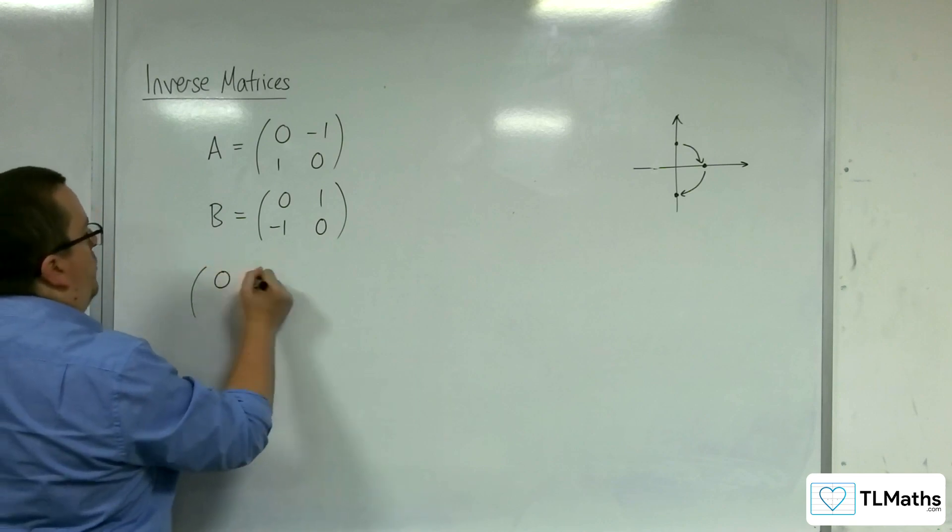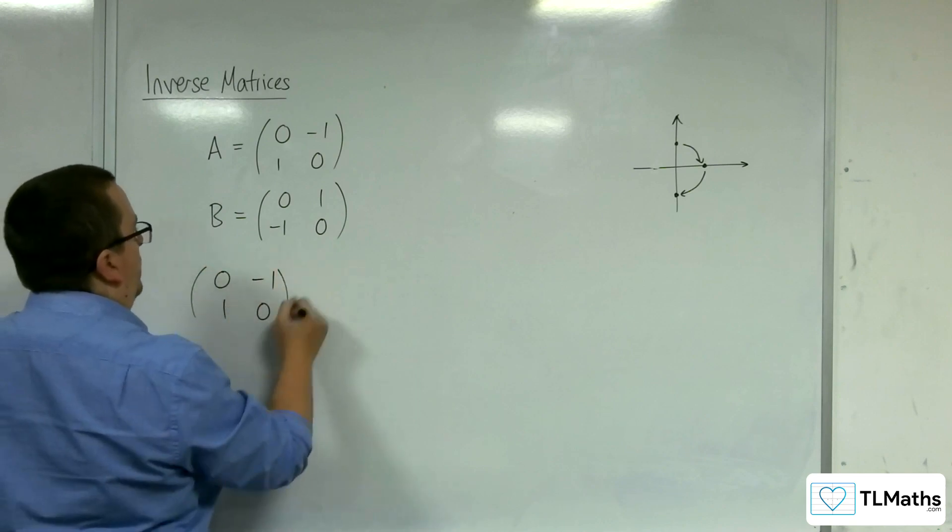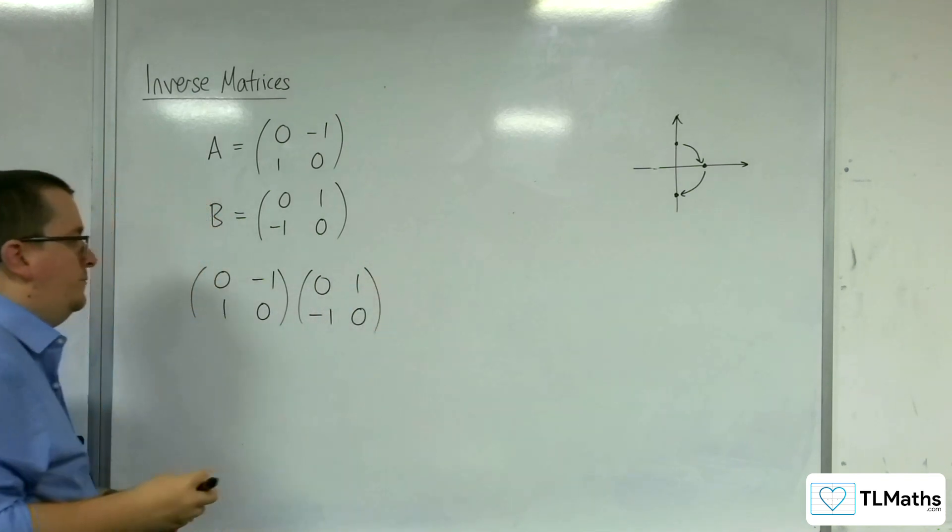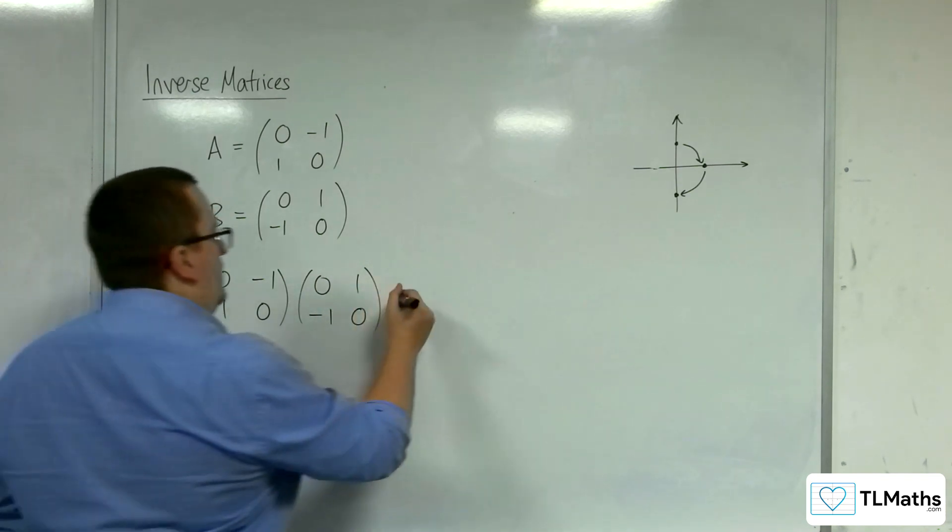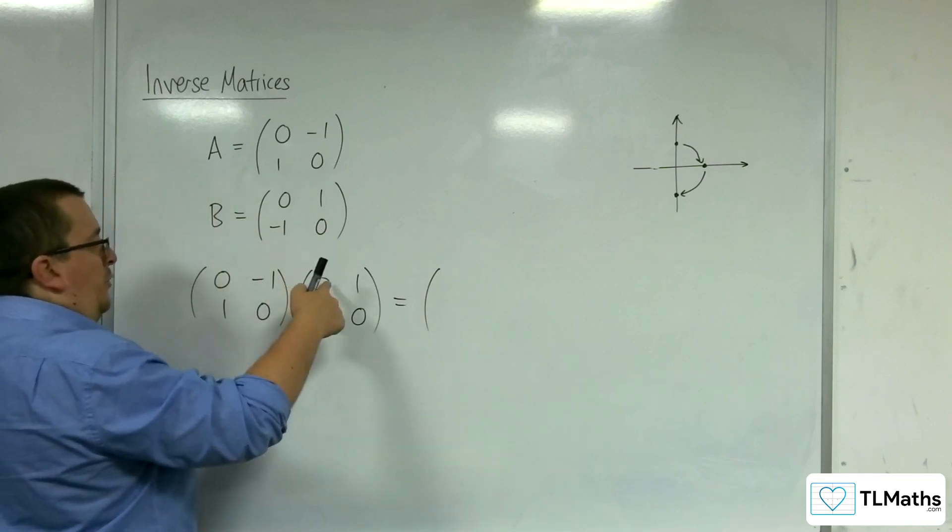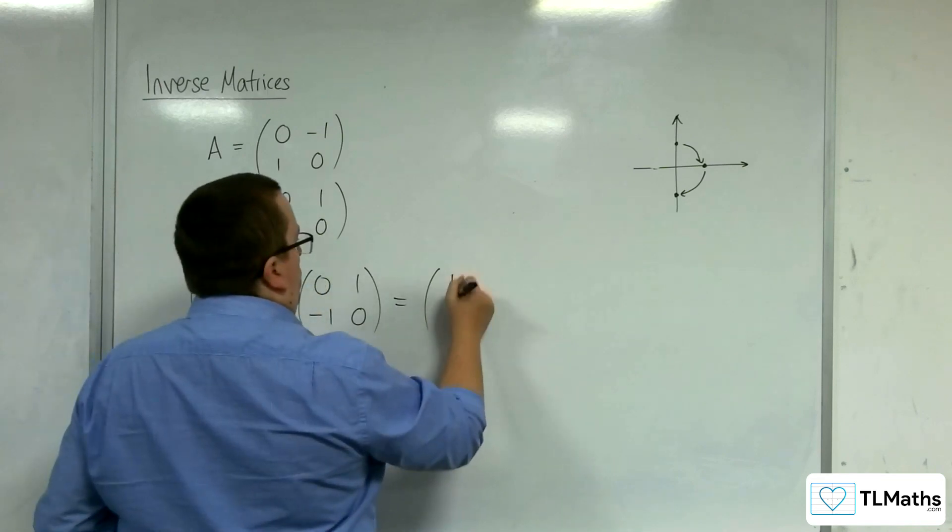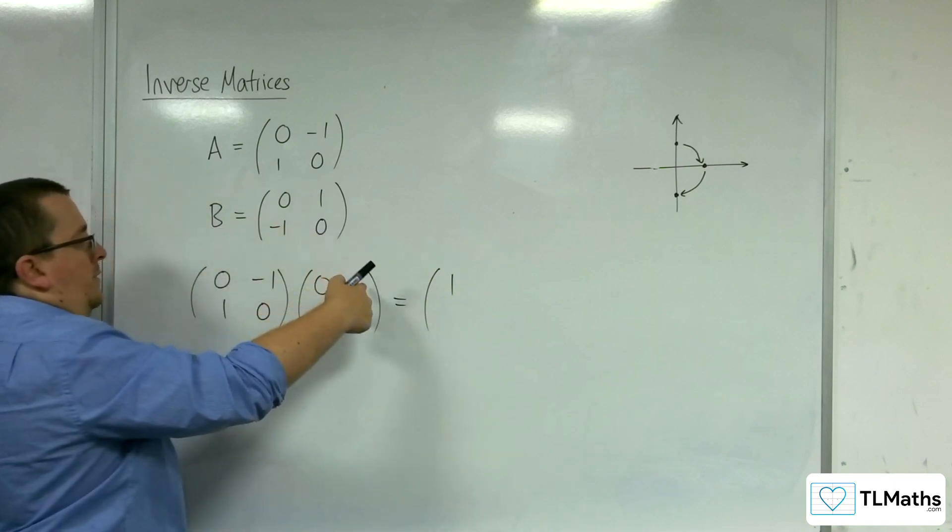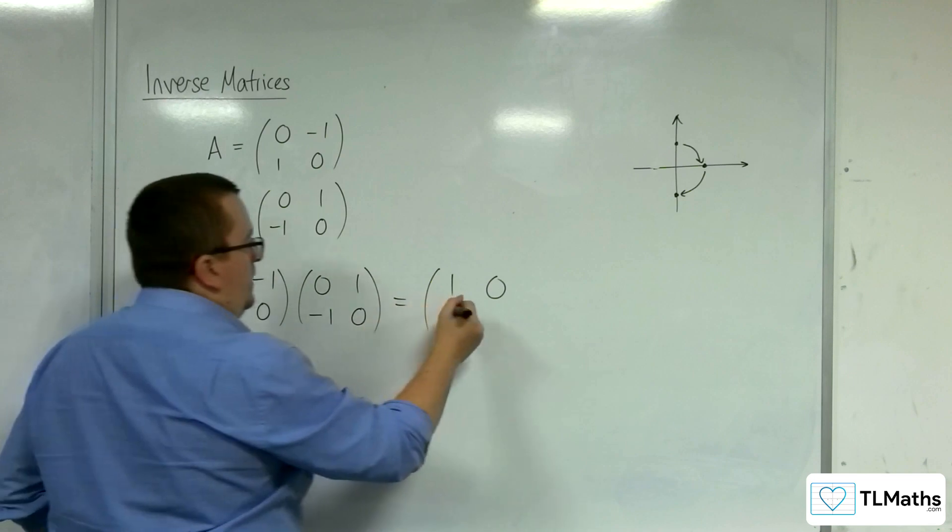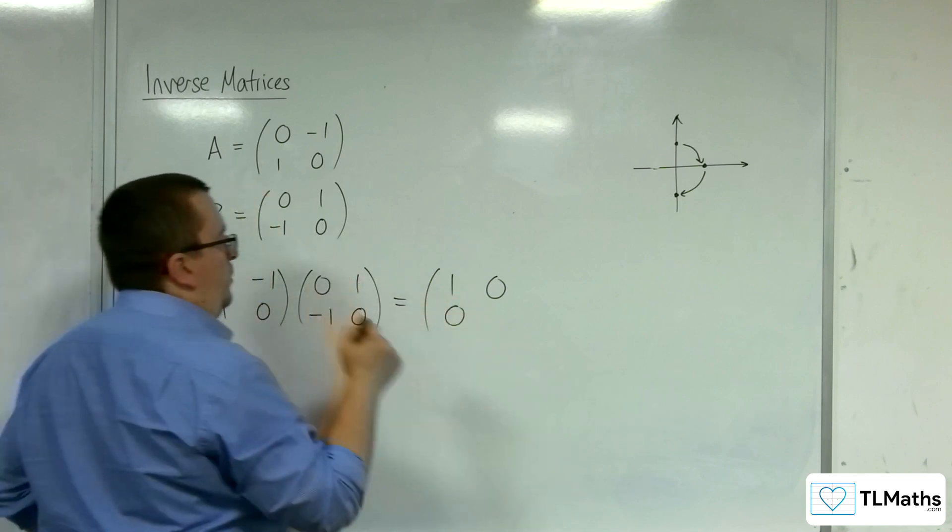So if we did (0, -1; 1, 0) times (0, 1; -1, 0), that gives us (1, 0; 0, 1). Working through the multiplication: 1 times 0 is 0, 1 times 0 times 0 minus 1 is 0, 1 times 0 times 1, 0 is 1.